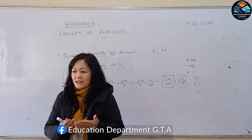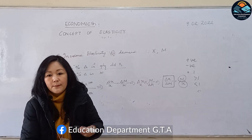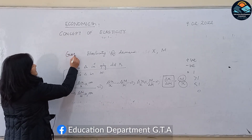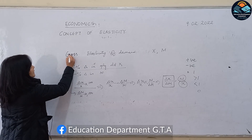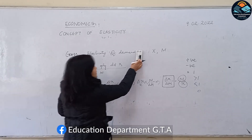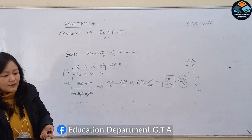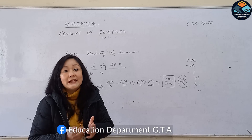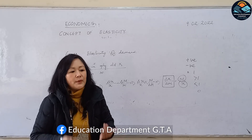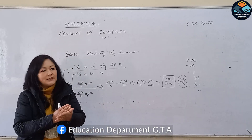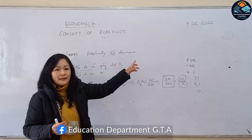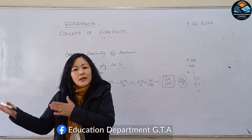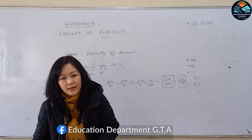We have discussed income elasticity of demand. The other independent variable was price of related goods — that would be known as cross elasticity of demand. Cross elasticity of demand means the responsiveness or the change of demand due to the change in the related goods — complementary goods or substitutes. Cross elasticity of demand means the percentage change in quantity demanded due to a 1% change in the price of its related goods.